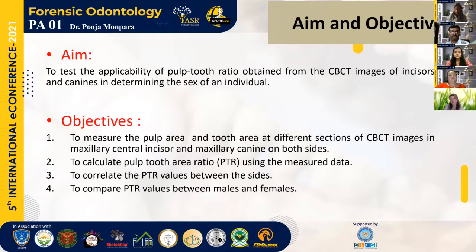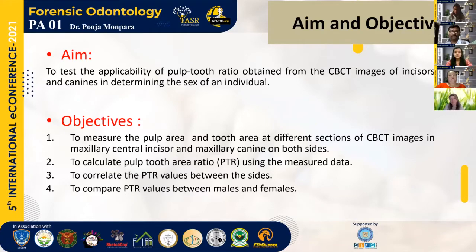Aim and objectives. The aim of the study is to test the applicability of the pulp-tooth area ratio obtained from CBCT images of the incisors and the canine in determining the sex of an individual. The objectives are to measure the pulp area and tooth area of different sections of CBCT images of the maxillary central incisor on both sides and the canine, then calculate the PTR value using this measured data, and correlate the PTR value between both sides and compare between male and female.